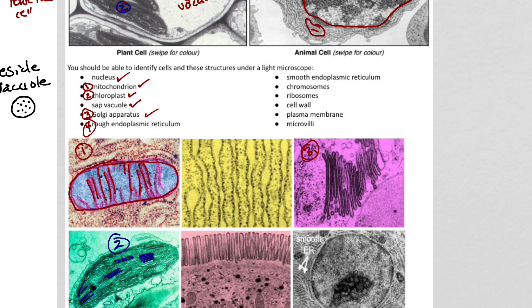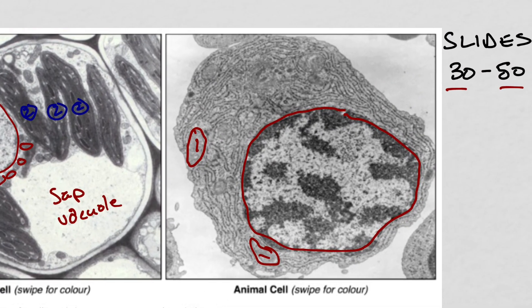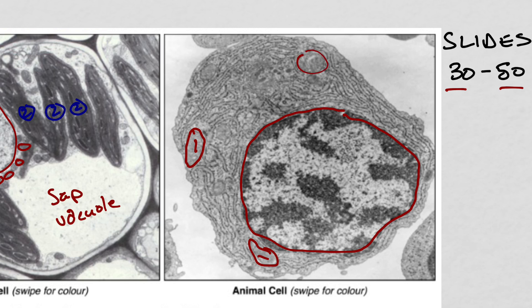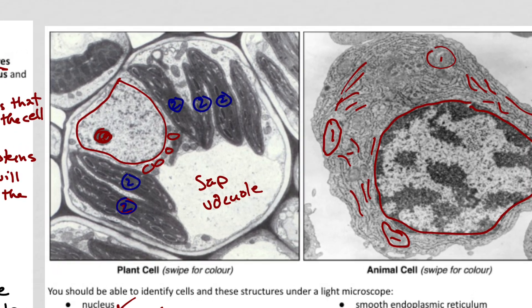The RER is really easy to spot — it looks like a whole bunch of tubes and you're going to see dots all along it. Each of these dots is a ribosome. This particular cell up here has tons of RER — all of these tubes with dots on them. This is a cell that is making a ton of stuff to be sent out of the cell — this is probably a liver cell or a pancreas cell, since those make a lot of different things.